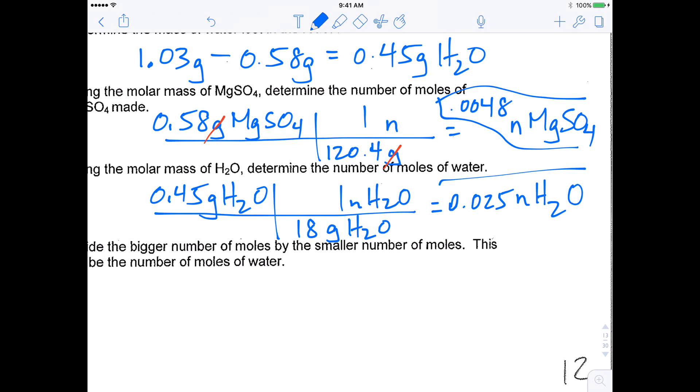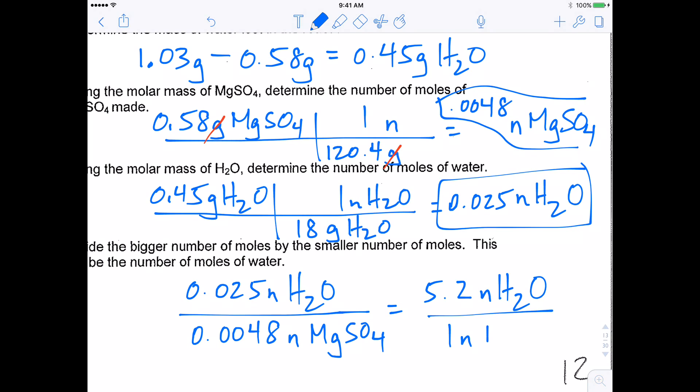So what we're going to do with these two numbers that we calculate is compare the mole ratio. And so we're going to take our bigger number of moles divided by our smaller number of moles. Our bigger number of moles is 0.025 moles divided by 0.0048 moles of MgSO4. So the reason we're doing this is we're going to get a number and it's about 5.2. So it says for every 5.2 moles of water, there will be one mole of MgSO4. So the reason we're doing this is we have a cleaner ratio of the moles of water to moles of MgSO4.